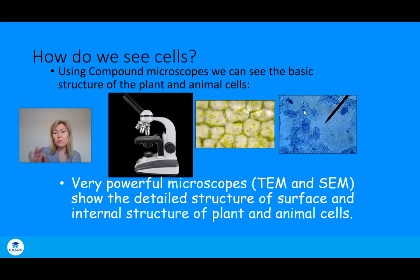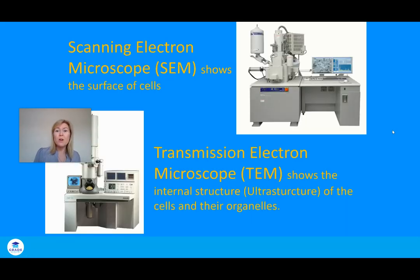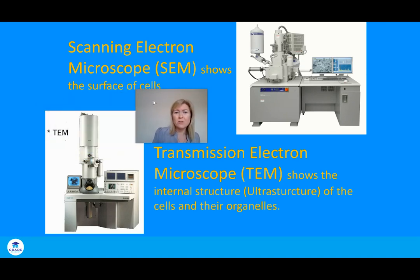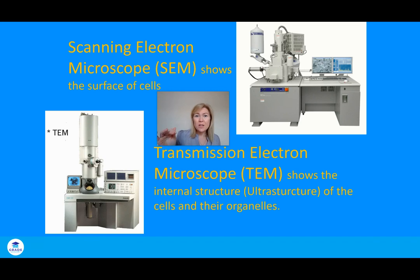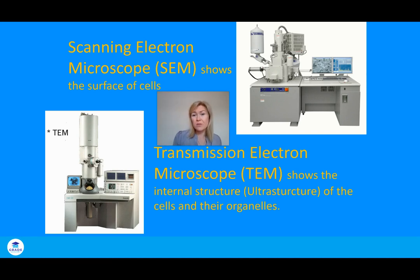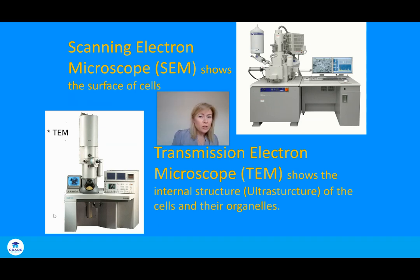We see a lot more internal detail with an electron microscope than with a light microscope. There are two types: the scanning electron microscope (SEM) shows the surface of a cell — for example, the biconcave shape of a red blood cell. The transmission electron microscope (TEM) is much more important because it shows the internal structure, which we refer to as the ultrastructure of the cells. Inside, you have structures called organelles.